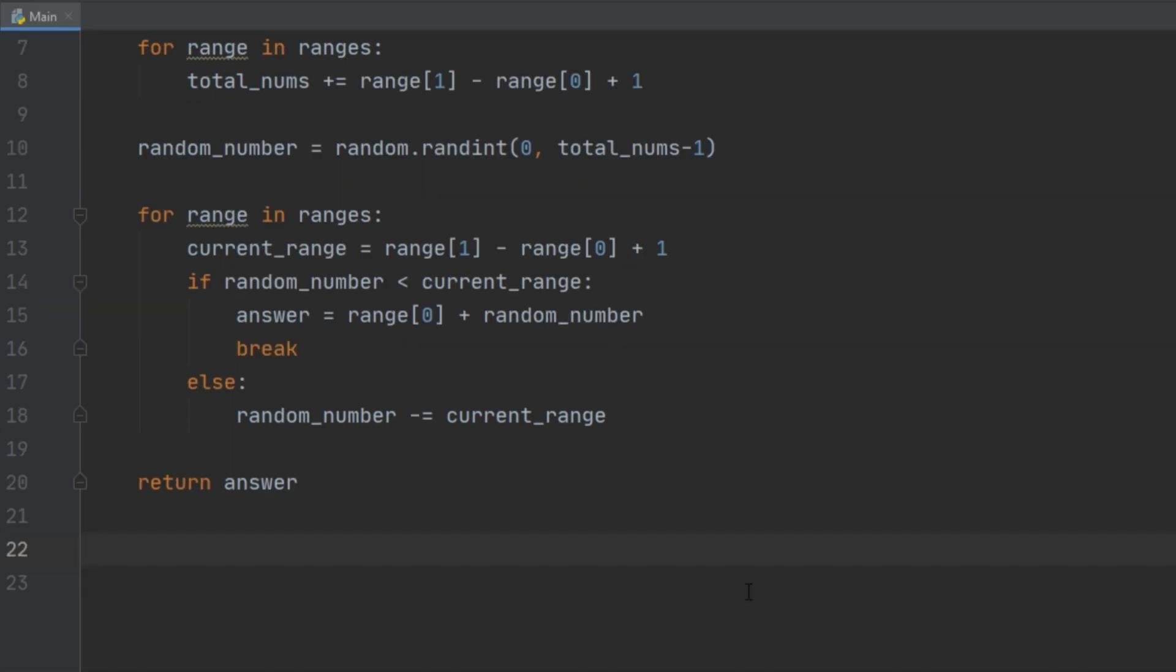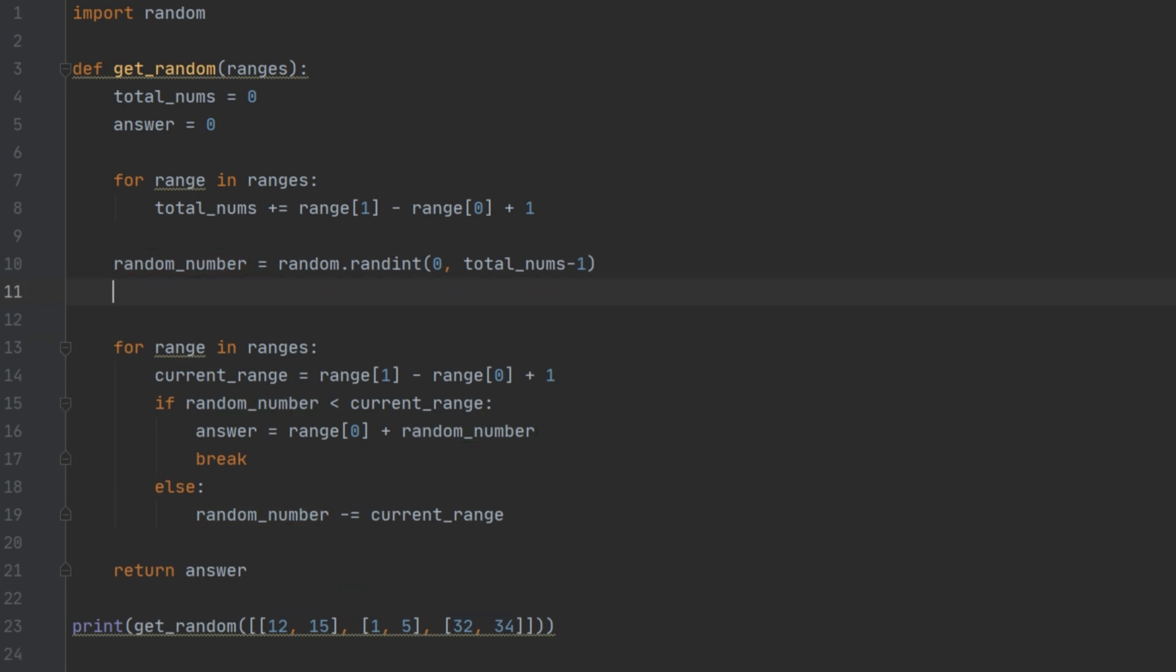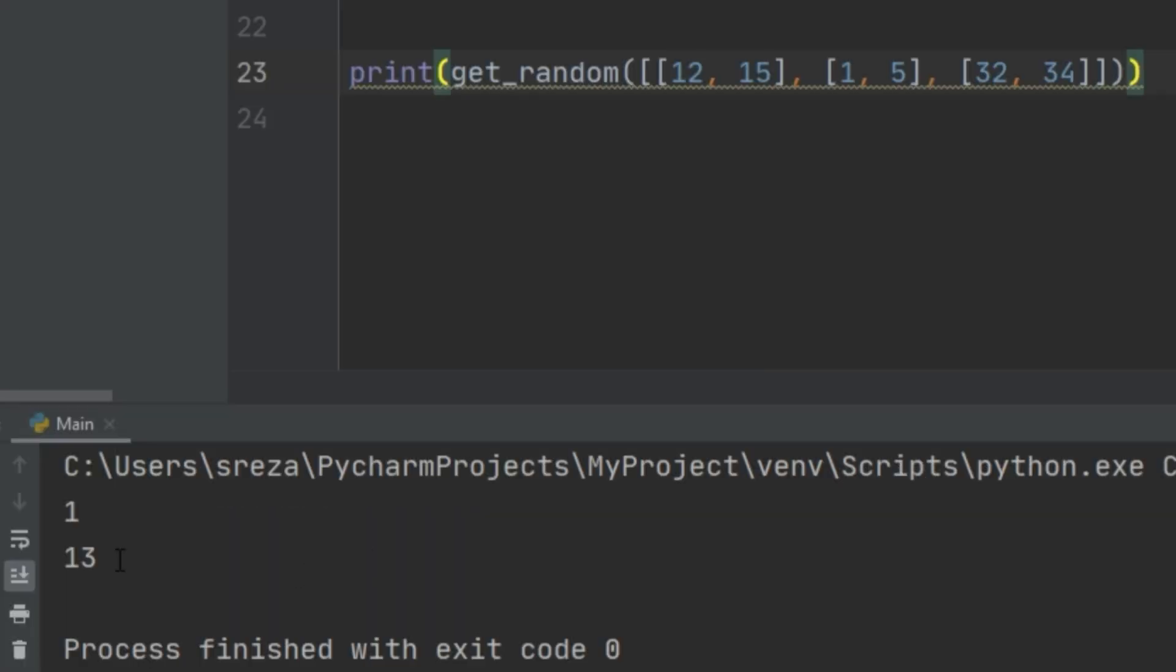Let's go ahead and test this out and see if it works. Let's use the same numbers that we had in our example. Before we run this, let's print out what the random number is just so we can verify that we are getting the correct answer. Let's run it. We see that when we get the number 1 - remember we were starting at 0, so 0 would be 12 - that random number we're getting is 1, so 13 is in fact the correct answer.